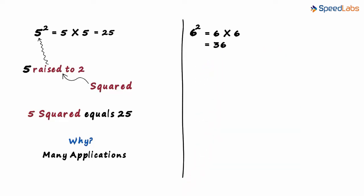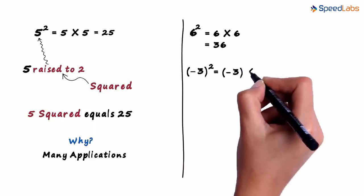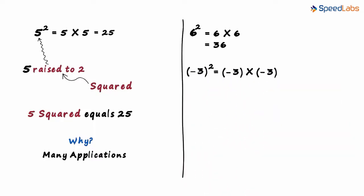Now let's try to find the squares of a couple of negative numbers. Say, minus 3 the whole squared. That will equal minus 3 multiplied by minus 3. That equals 9.